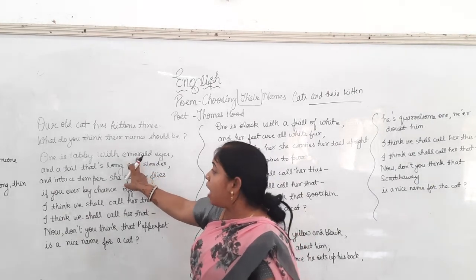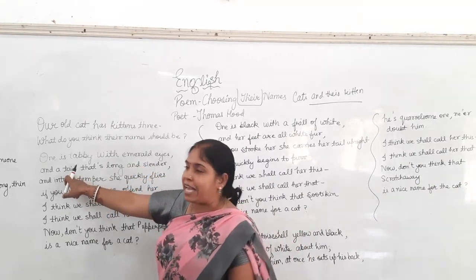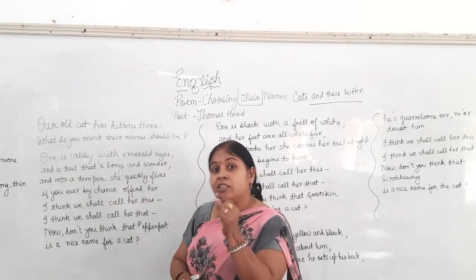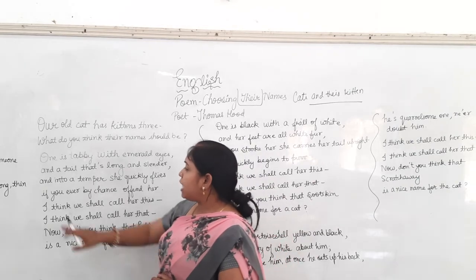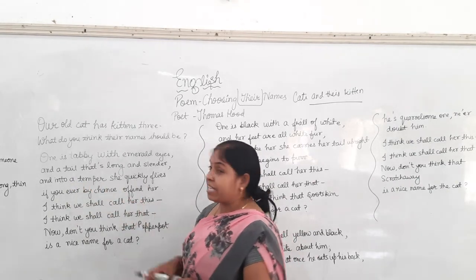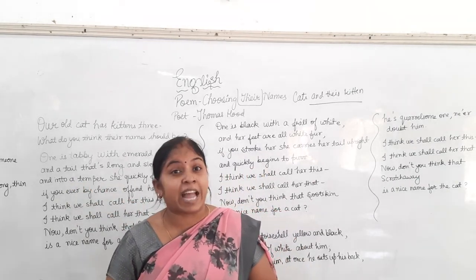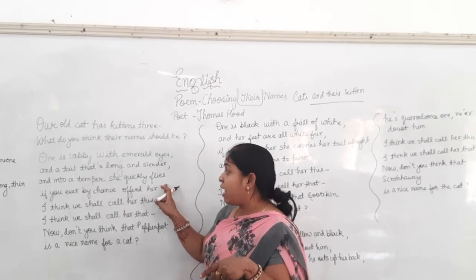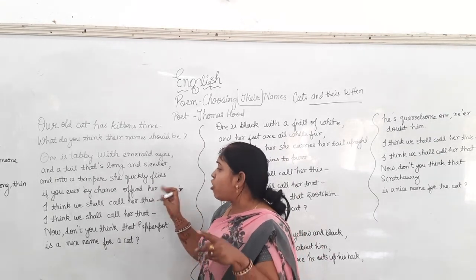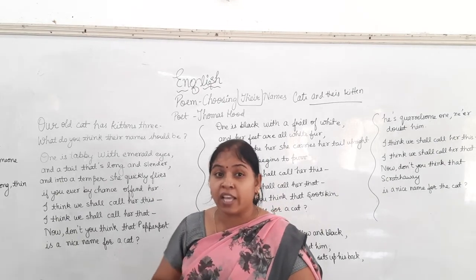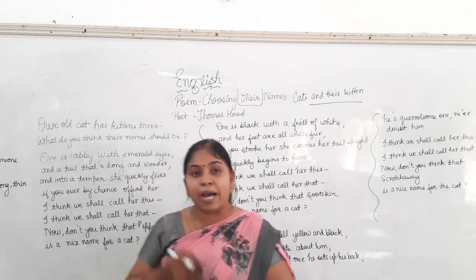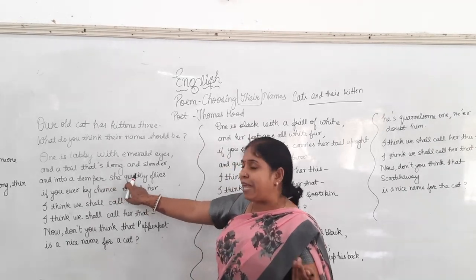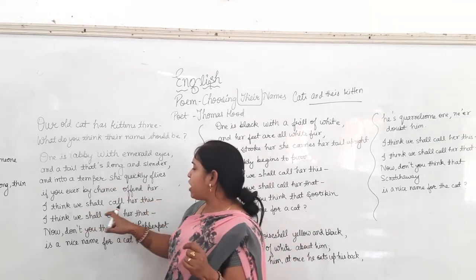The cat has a tail that is very long and slender — very thin. And into a trap where she quickly flies. When the cat is very furious and very angry, she quickly flies. And sometimes if you make the cat upset, she quickly runs away from the place.